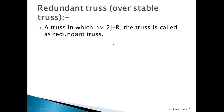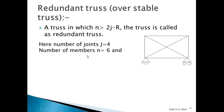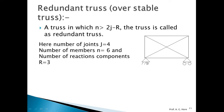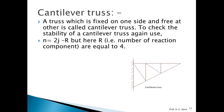A redundant truss has n > 2j − r. For example, with j = 4 joints, n = 6 members, and r = 3 reactions, we get 2j − r = 5. Since n = 6 > 5, this is a redundant type of truss.